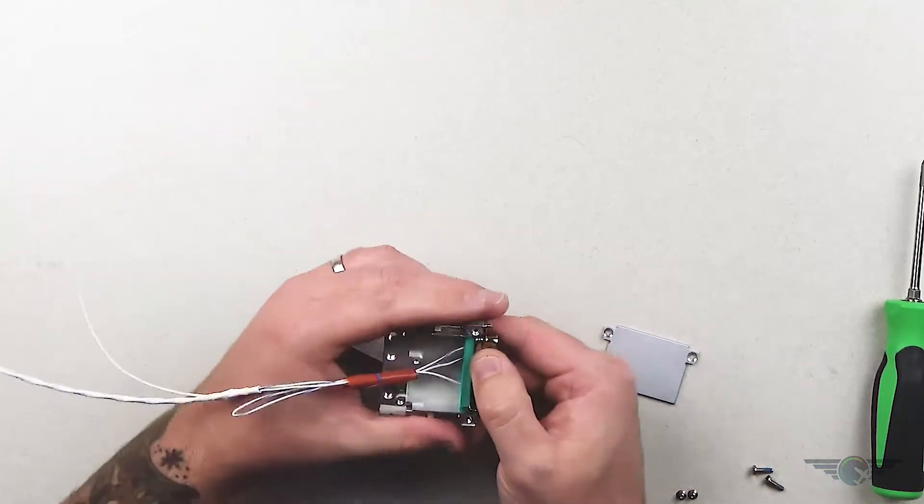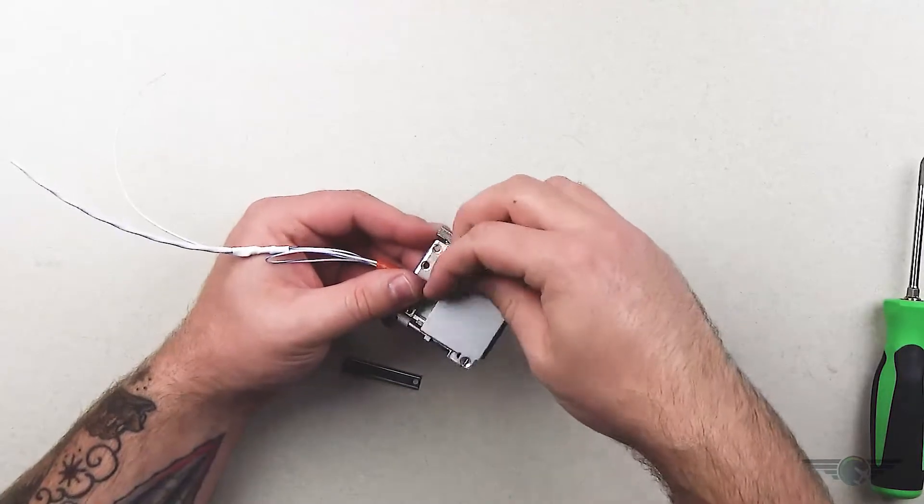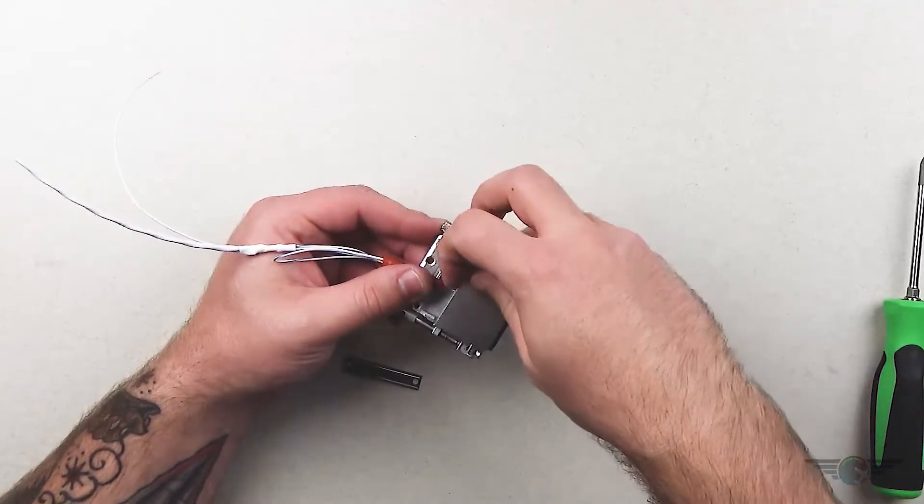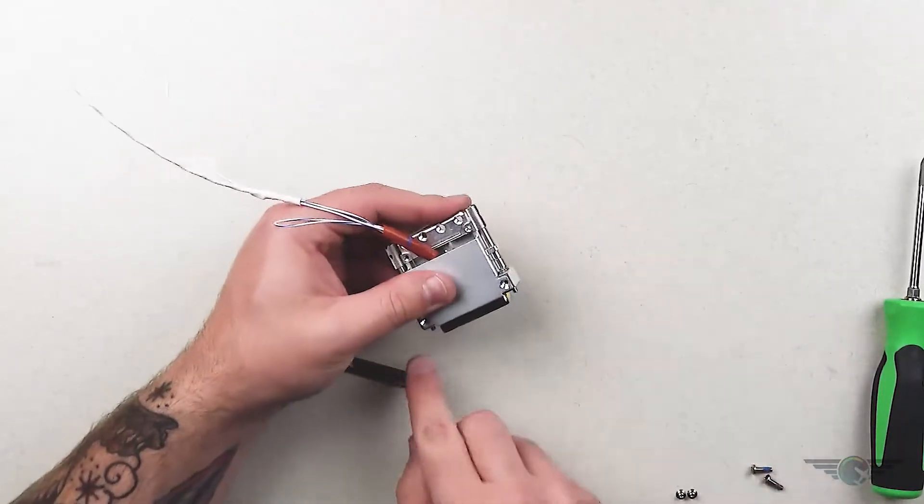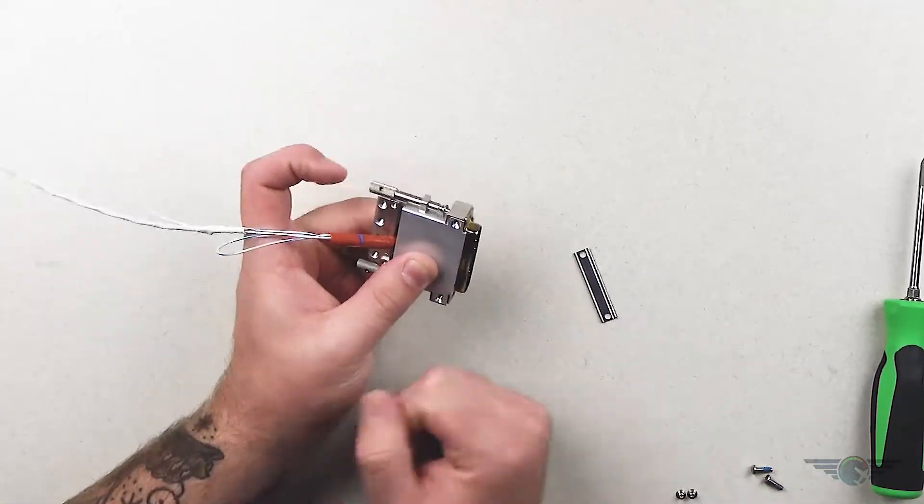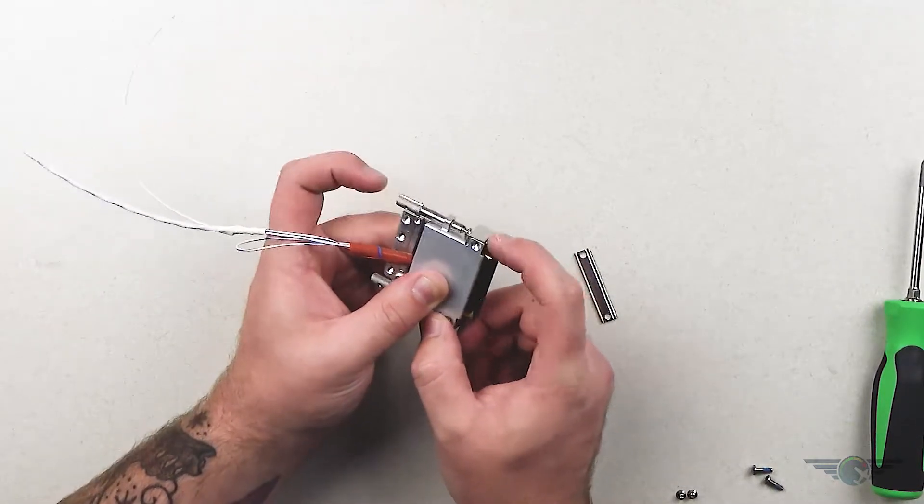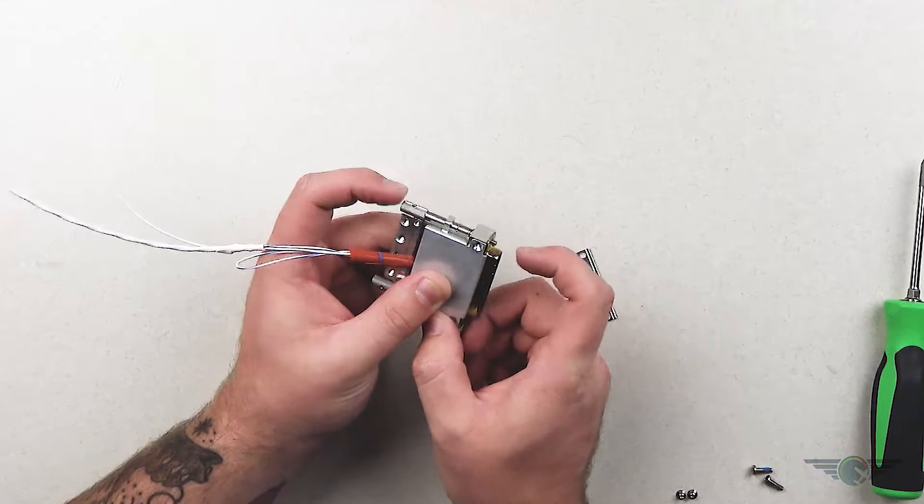So first things first, I'm going to put the cover on because the cover has a little lip, and that lip is going to hold your connector in place. You see on both sides it's holding your connector in, and then there's holes here for the back shell screws to poke through.